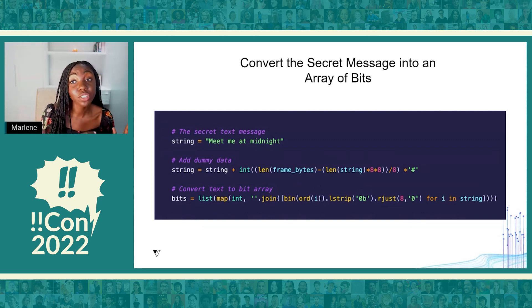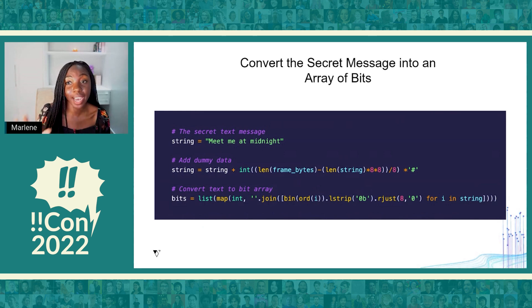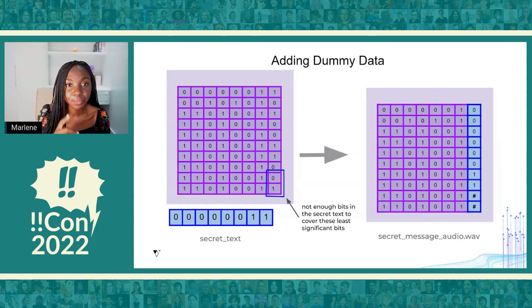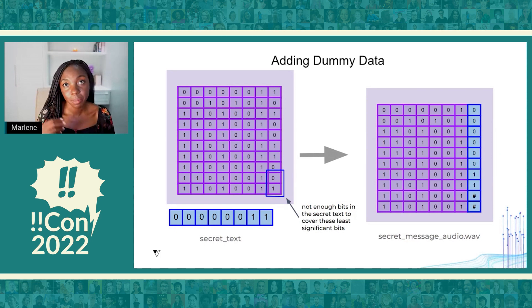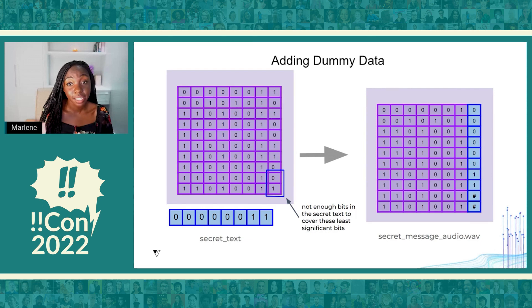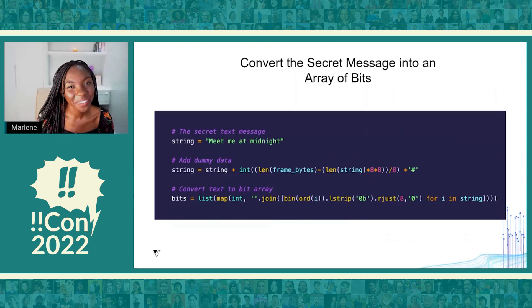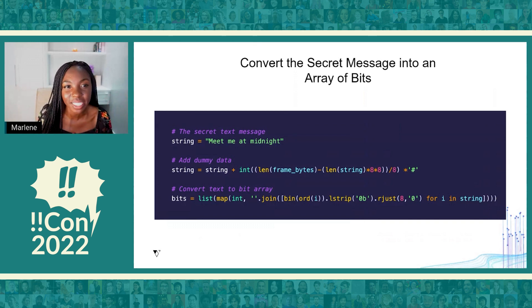Next, we want to convert our secret message into an array of bits. We start by saving the message to a variable called string, and then we add some dummy data onto the back of that string. The reason we add dummy data is that our audio file is larger than the line of text from our secret message, meaning the bits from the secret message won't be enough to fill every least significant bit of the bytes in our cover audio. The bits not replaced by the secret message can then be replaced by our dummy data. After adding the dummy data, we convert the resulting string into an array of bits, as we can see in that last line of Python code.